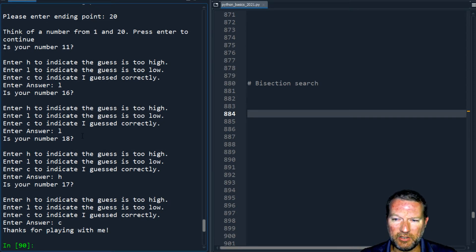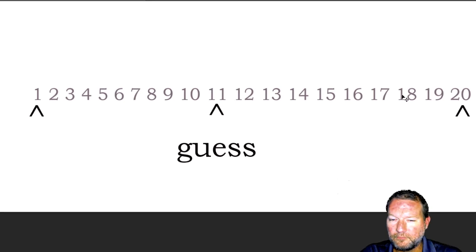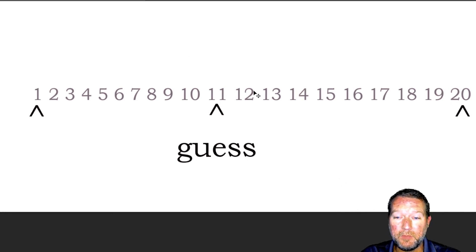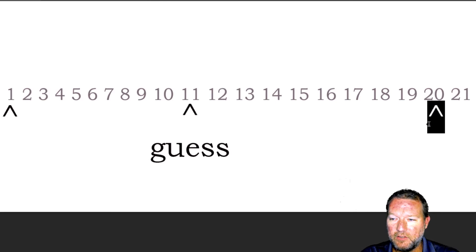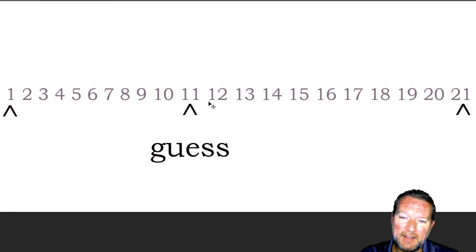Now let's go through how this algorithm works. Let's look at this visualization before we actually write it. Our first guess was 11, and there's a little caveat — to include both endpoints we need to use floor division. We're going to change the max to 21, and you'll see the math on this in a minute. That's why our first guess was 11. We're going to have three pointers: a low, a high, and a guess.